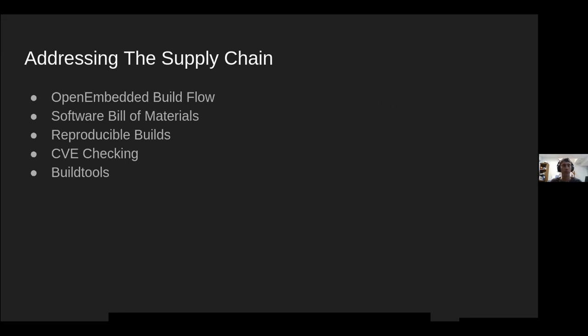I'm going to address several ways we handle the software supply chain within these projects. I'll cover the general OpenEmbedded build flow driven by BitBake, software bill of materials support which we're working hard to add very soon, reproducible builds, CVE checking, and finally something called build tools.